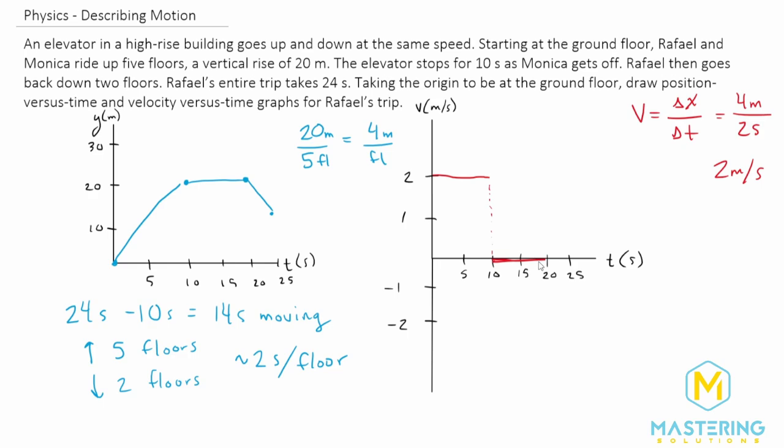And then we're going down at the same velocity. But now we're going down. So it's a negative velocity. So it's going to be a negative two meters per second for the last four seconds.